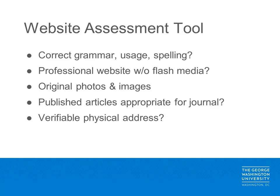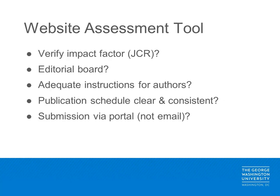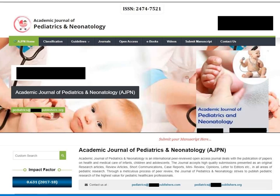A website assessment tool is also available to provide guidelines for evaluating a journal's website. Things to look for include correct grammar, spelling, and awkward language; a professional website appearance; a verifiable physical address; and a verified impact factor. Look at the instructions for authors page and determine if the information provided is sufficient. Check whether the journal has a manuscript submission portal — a submission portal is the industry norm for legitimate scholarly journals — or if they request email submissions instead. Using this information, what is your impression of the screenshot of this journal website?